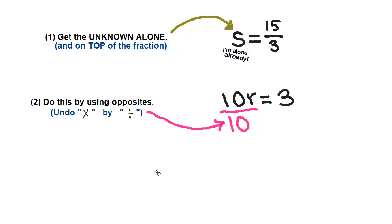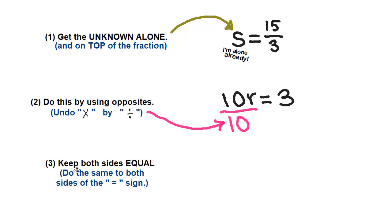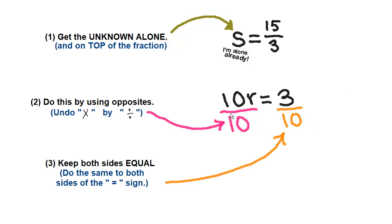There's one really important step you also have to keep following: you have to keep both sides of the equation equal. That means you have to do the same to both sides of the equal sign. We can't divide just one side by 10, because then the left side would be a different number and the right side would not be equal anymore. If we're going to divide the left side by 10, we have to divide the right side by 10 too.